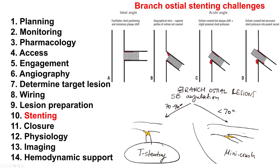The challenge in this case, for branch osteal lesions with angulation different from 90 degrees, is that if a stent is placed right to the ostium, part of the ostium is not covered, which can lead to a higher restenosis rate. Conversely, if the stent is extended into the main vessel, the ostium is covered but the stent protrudes into the main vessel, creating issues with delivering equipment. One way to overcome this is the mini-crush technique, in which a stent is placed into the main vessel, then crushed with a balloon, rewired, and a kissing balloon inflation is performed.